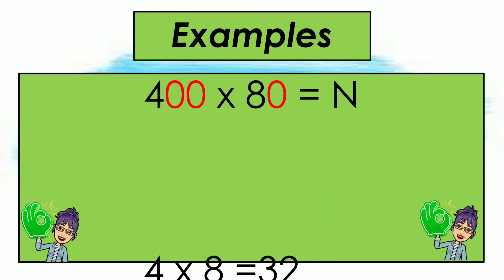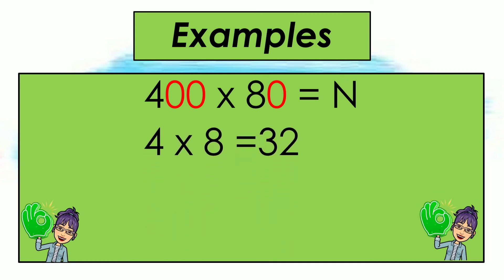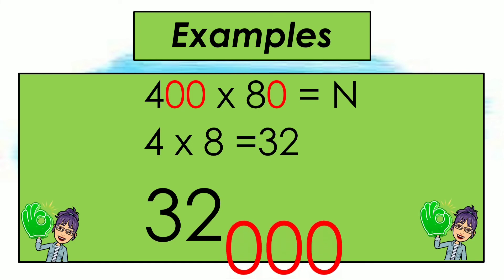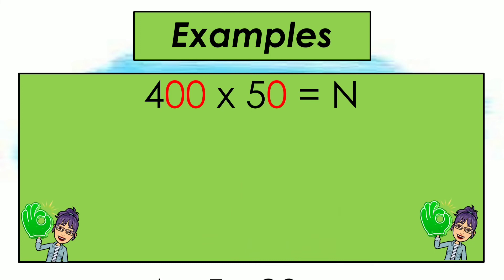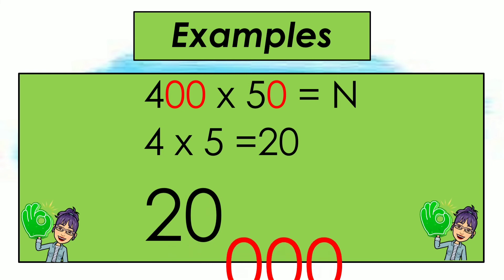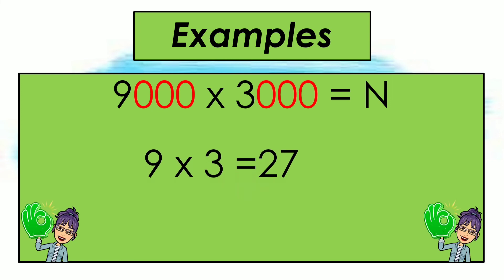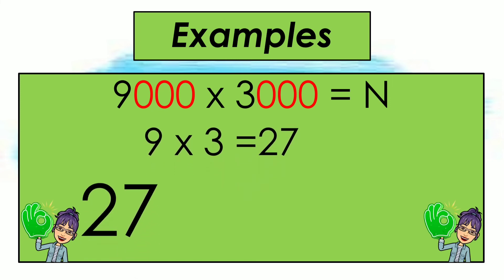Next example: multiply the non-zero digits — 4 times 8 is 32. Since we have three zeros in the factors, add three zeros at the end of 32. That gives an answer of 32,000. Next: 400 times 50 — 4 times 5 is 20. With three zeros in the factors, add them to 20 to get 20,000. Next: 9,000 times 3,000 — 9 times 3 is 27. With six zeros in the factors, add them to 27 to get 27,000,000.